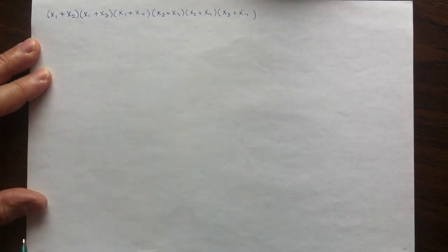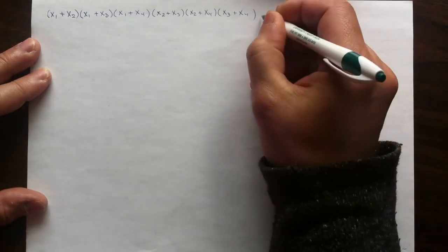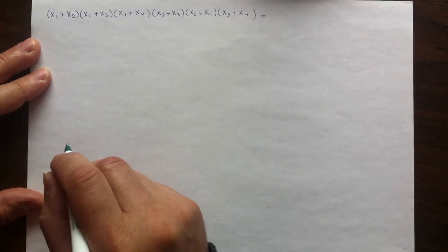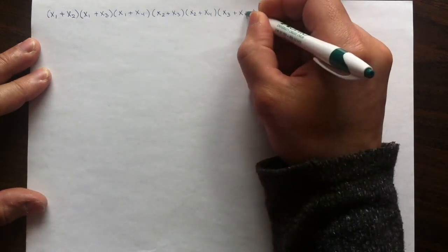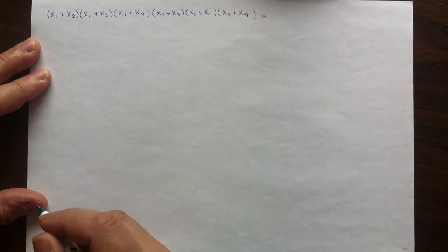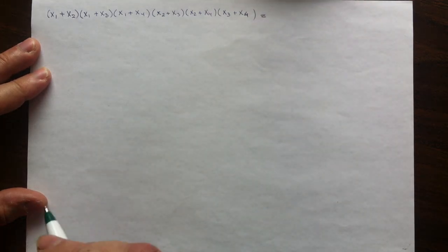That is obviously a symmetric polynomial, and as such it should be possible to write it as a polynomial in elementary symmetric functions. Symmetric polynomials will have four of them: σ1, σ2, σ3, and σ4.